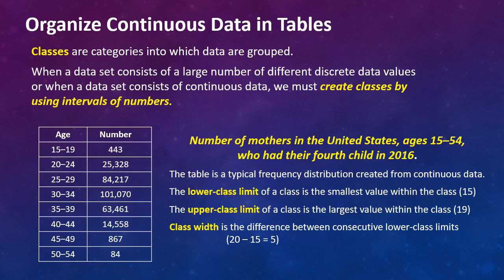Here we have a table that's showing the number of mothers in the United States ages 15 through 54 who had their fourth child in 2016. This table is a typical frequency distribution created from continuous data. So we have all the ages between 15 and 19, 20 and 24, etc. So the whole range is continuous data. If you're 15 and a half, you've fallen here. It's continuous in that we're covering all different age ranges from 15 through 54.